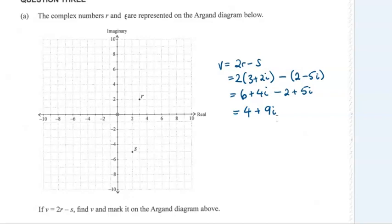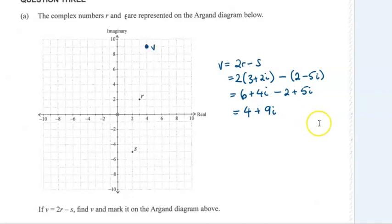The key bit to make sure you do not miss is to mark it on the diagram — if you don't, you're not going to get the achieve point. So here we've got 4 plus 9i plotted on the positive quadrant.